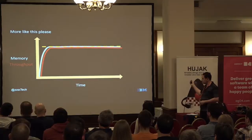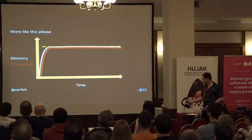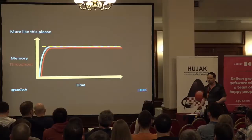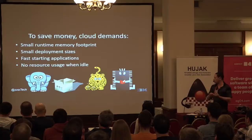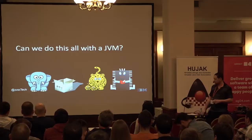The best model would be to get the application up and running as soon as possible and keep memory flat at peak usage. That's achievable if your application was written in C, but in Java or other languages with similar runtimes it's more difficult. What you need in the cloud is: small runtime memory footprint, small deployment sizes, fast application start and stop for microservices, and ideally no overhead when idle.